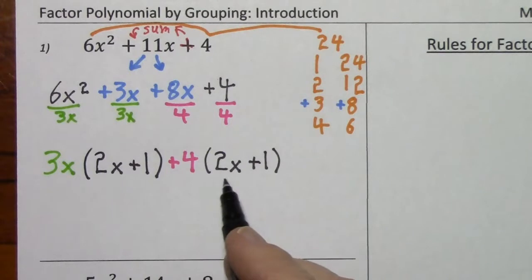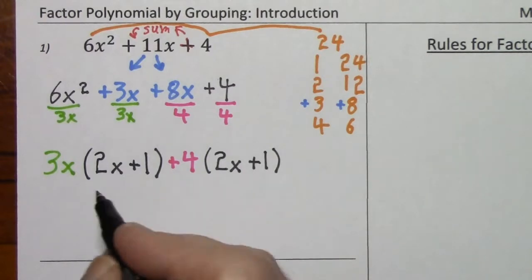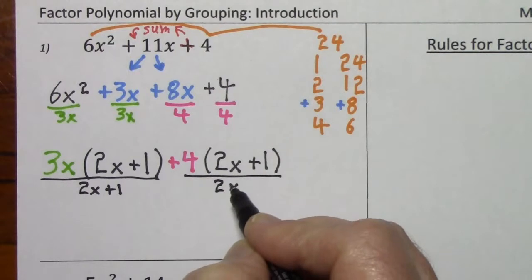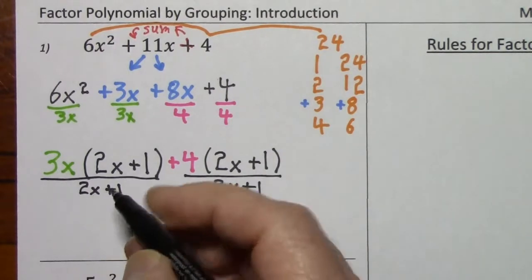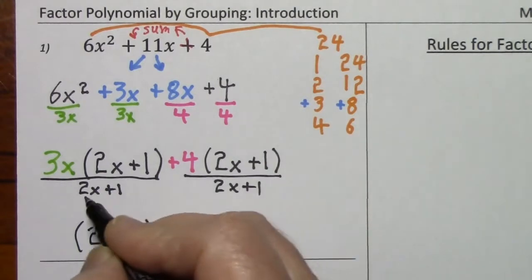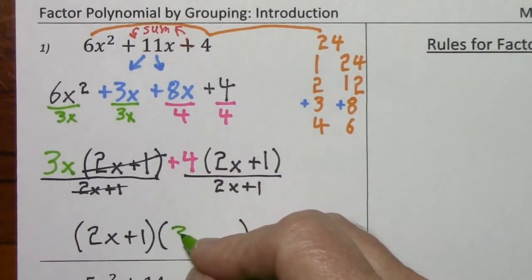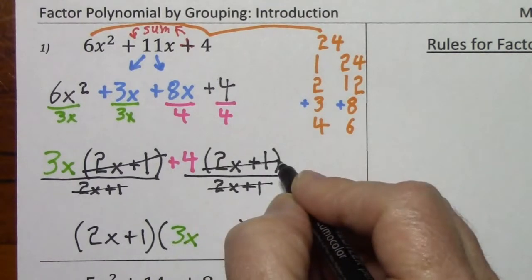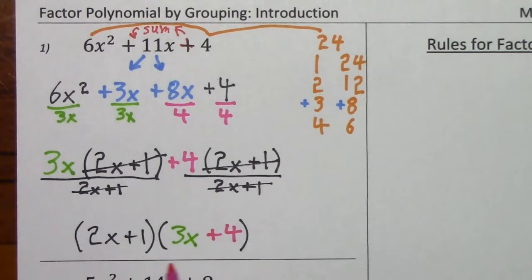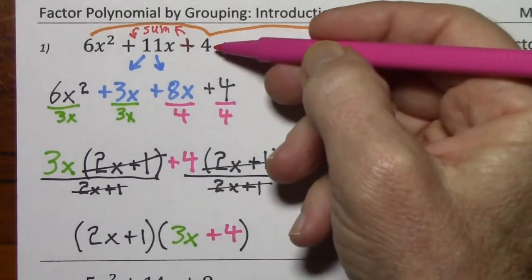Notice that what we have in parentheses is identical — this must be the case if you're using factor by grouping — because now we're going to factor out 2x plus 1 from each of these. When we divide out the 2x plus 1, the only thing left standing is 3x, and again when we divide out 2x plus 1, the only thing left standing is a positive 4. Here's the factored form of our original polynomial. You could check this by multiplying and you will get right back where you started.